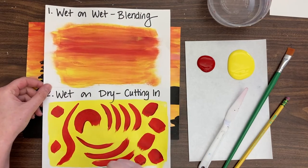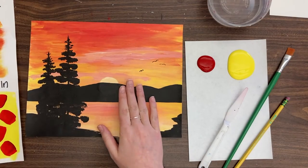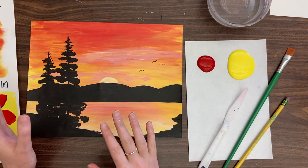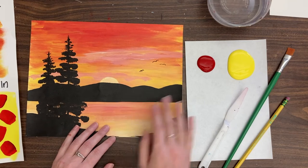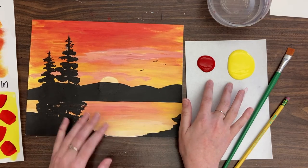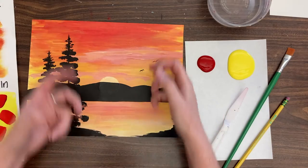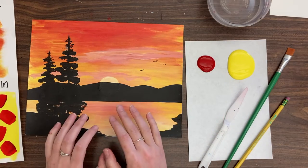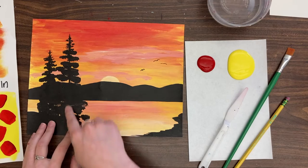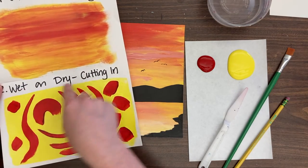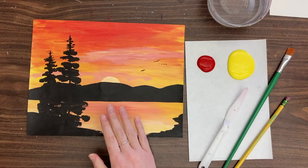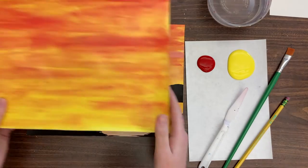Today we're going to be practicing with just these two: the wet on wet blending and the wet on dry cutting in techniques to create this piece. I'm going to break this up between two videos. This video today we're just going to tackle the yellow and orange and red sunset situation, and then we're going to let it dry overnight and then we're going to come in and do the black silhouettes by cutting in, doing a little wet on dry.